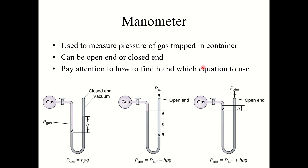The last topic in this section is manometers. Manometers are another way to measure the pressure of gas — specifically, the pressure of gas trapped inside a container. They can be open-end or closed-end; we'll focus on open-end manometers. The key thing to pay attention to is whether you need to add or subtract the height from the atmospheric pressure — you won't be solving directly for the variables shown, but rather determining pressure from the diagram.